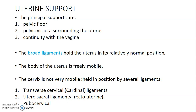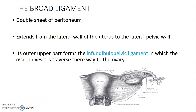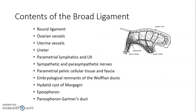The uterus is supported by three principal factors: the pelvic floor, the pelvic viscera around it, and its continuity with the vagina, along with the broad ligament on its sides. The cervix is not very mobile compared to the body of the uterus, and it is held in position by the transverse cervical (cardinal) ligament, the utero-sacral ligament, and the pubocervical ligament. The broad ligament is a double sheet of peritoneum on the lateral aspect of the uterus, joining it to the pelvic wall.